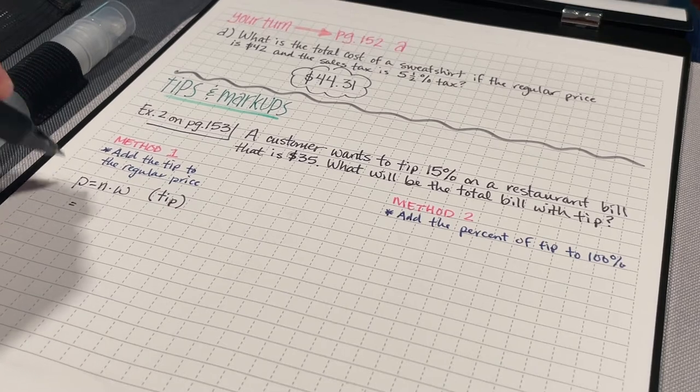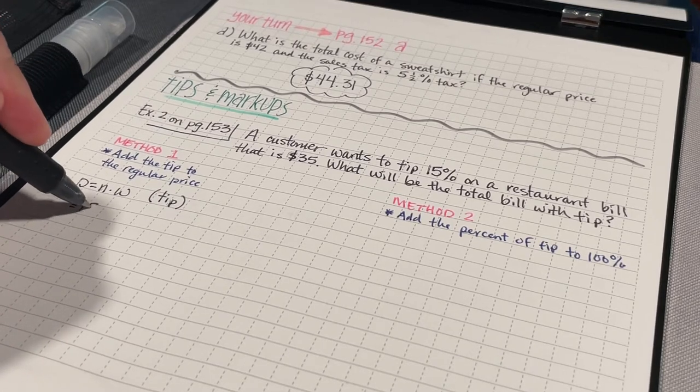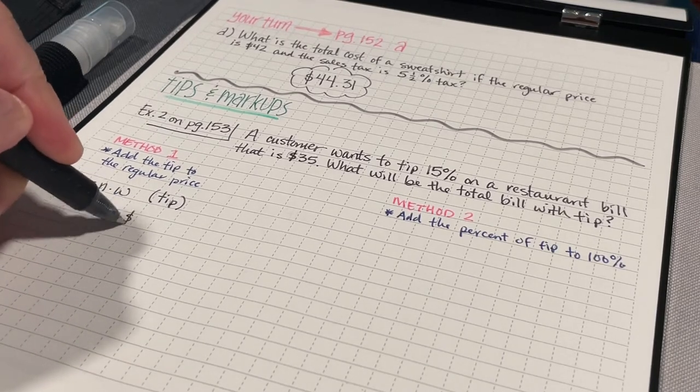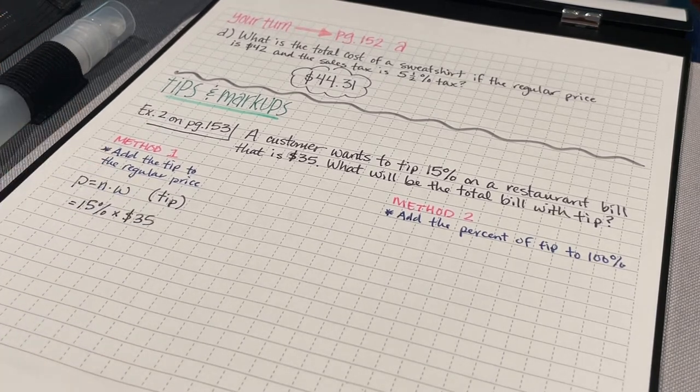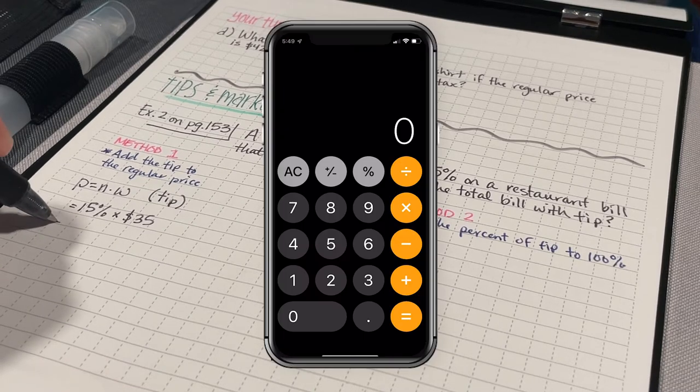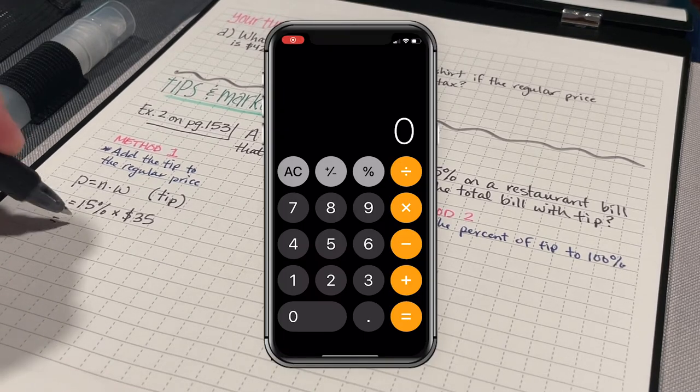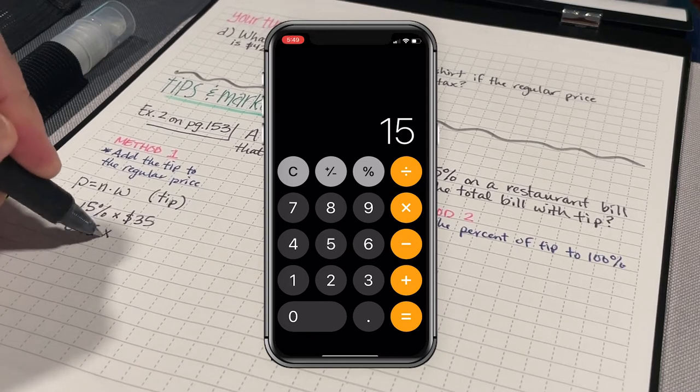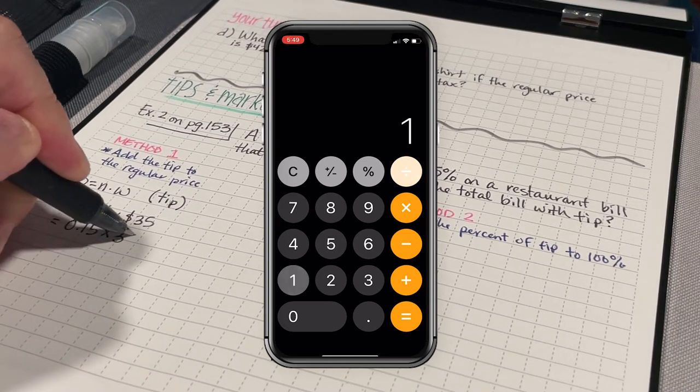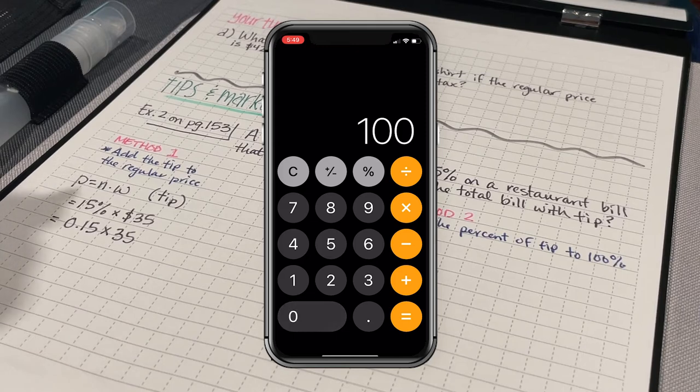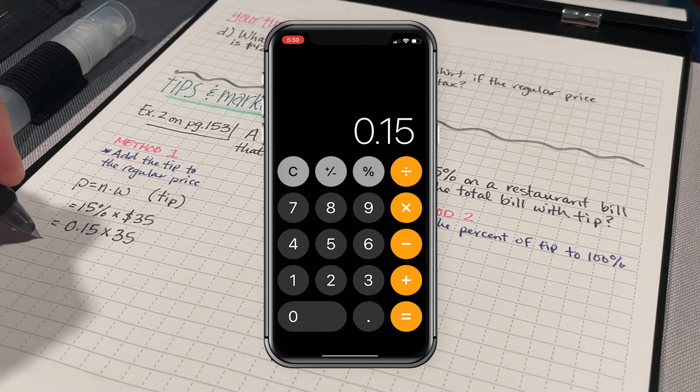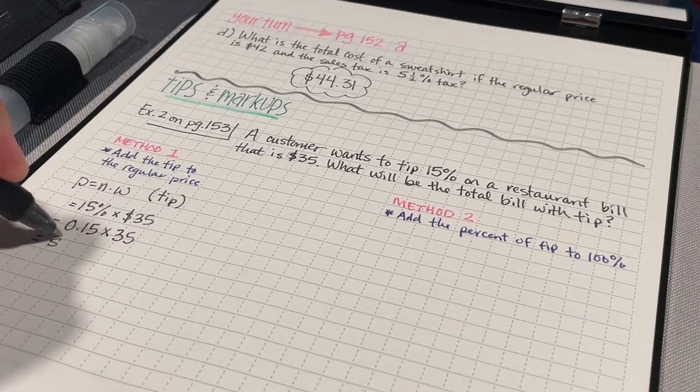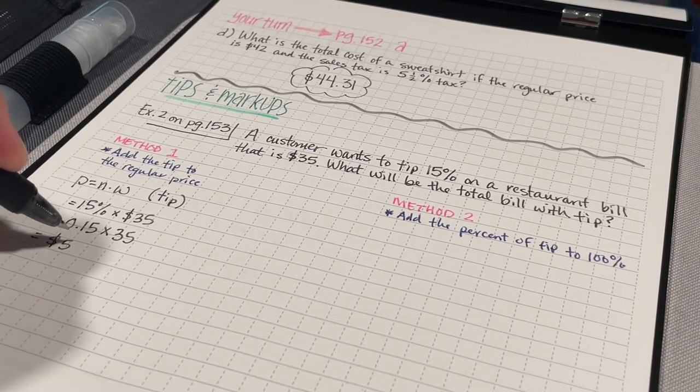Now I'll have 15% times the whole. And the whole was the $35 bill at the restaurant. I need to convert 15% into a decimal. That's 0.15. And I'm going to multiply that by 35. That's going to give me a tip of $5 and 25 cents.